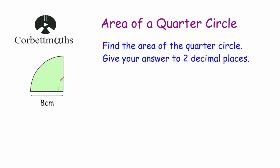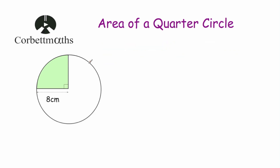We've got a radius, another radius and a right angle — that's a quarter circle — with the arc joining those. A quarter circle is a quarter of a whole circle. So if we find the area of the whole circle and then just divide it by four, we will find the area of the quarter circle.